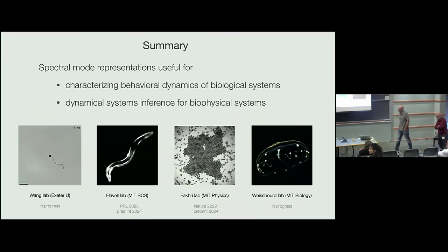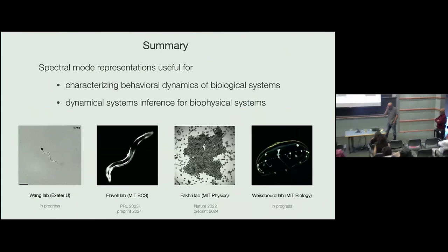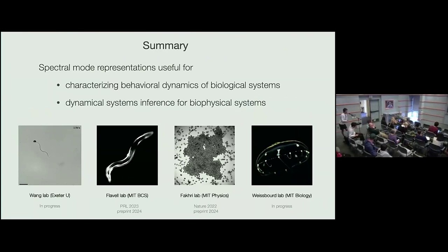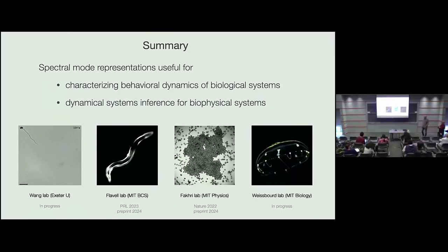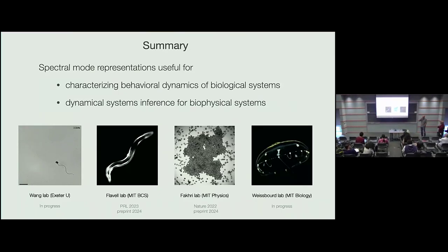Q: Have you tried using optimal transport-based techniques to infer the Fokker-Planck equation directly, rather than SDE inference? A: We found SDE inference works best in terms of numerical stability, using Bayesian inference with sparsity-promoting priors. It's also more data-efficient — mapping out the full Fokker-Planck equation space requires a lot of data. Once you have an SDE, you can always write down the Fokker-Planck a priori, so results are equivalent. The question is really what works better for the amount of data available.